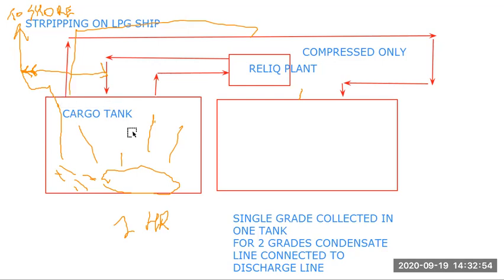While the gas is compressed and reliquified, we are using the proper reliquefaction plant. The liquid coming from the condensate is connected to the discharge line and discharged to shore. For each method, whichever is faster and suitable to our grades, that method we are using for this stripping.